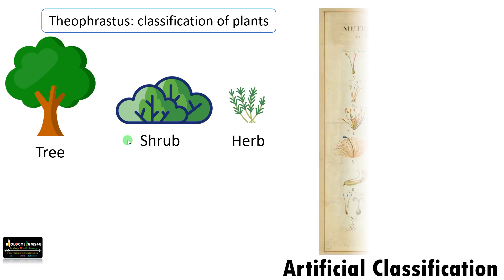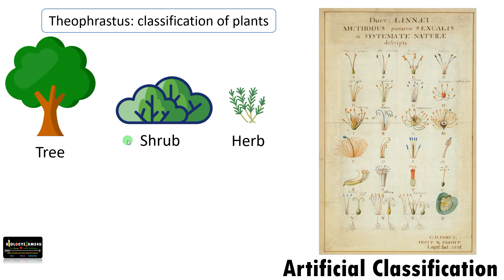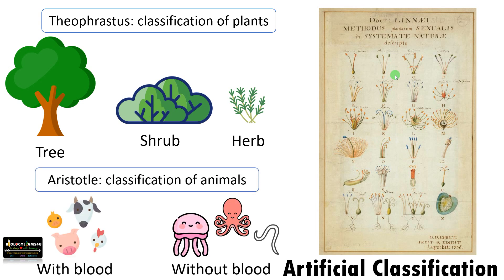One more example: Carlos Linnaeus classified angiosperms, or flowering plants, based on the number and arrangement of stamens. As you see here, this is Diandria, this is Triandria. Based on the number of stamens, he classified flowering plants into 24 groups. Only one character is considered for classification.